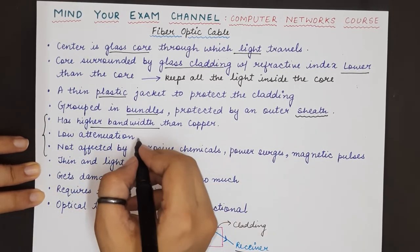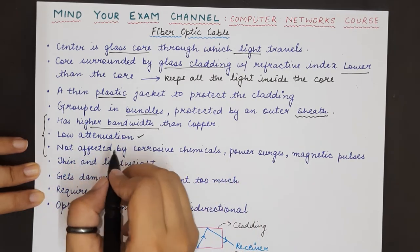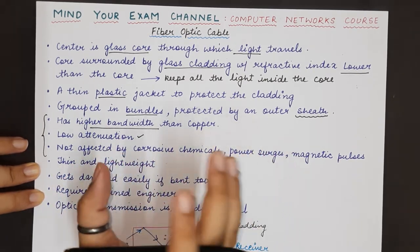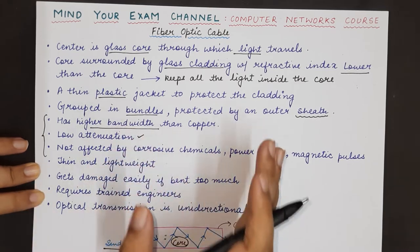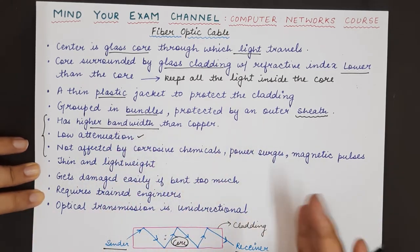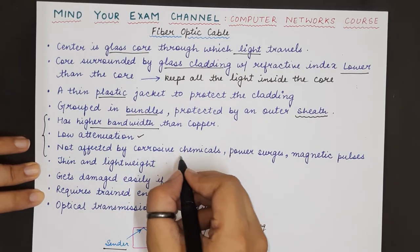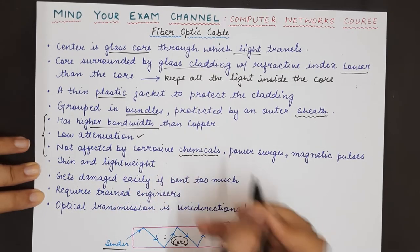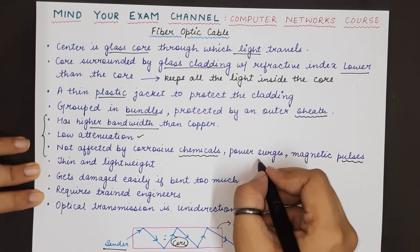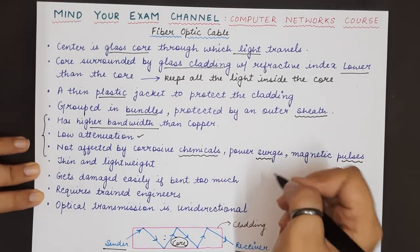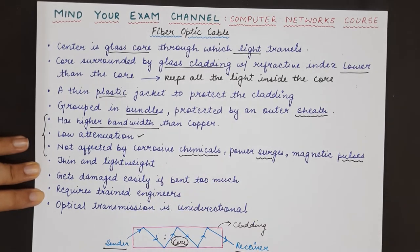Further, fiber optic has lower attenuation. Lower attenuation basically means that it is less affected by noise, so the data is not garbled during transmission. It is also not affected by corrosive chemicals, power surges, and magnetic pulses — so other kinds of external factors also do not affect the fiber optic cable.